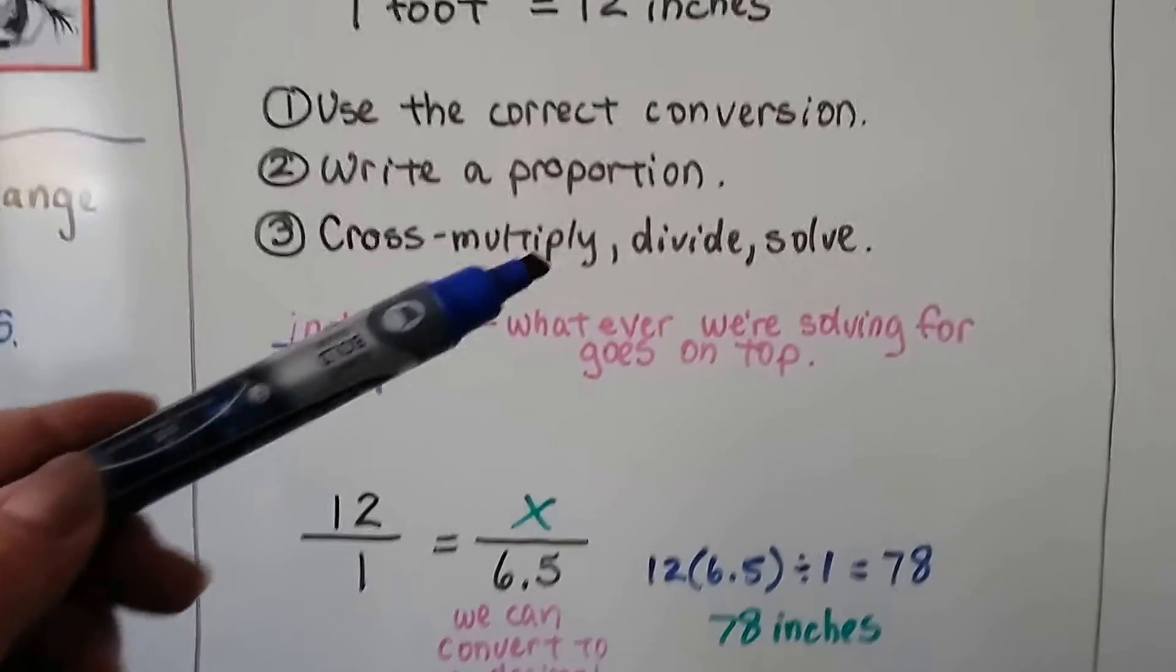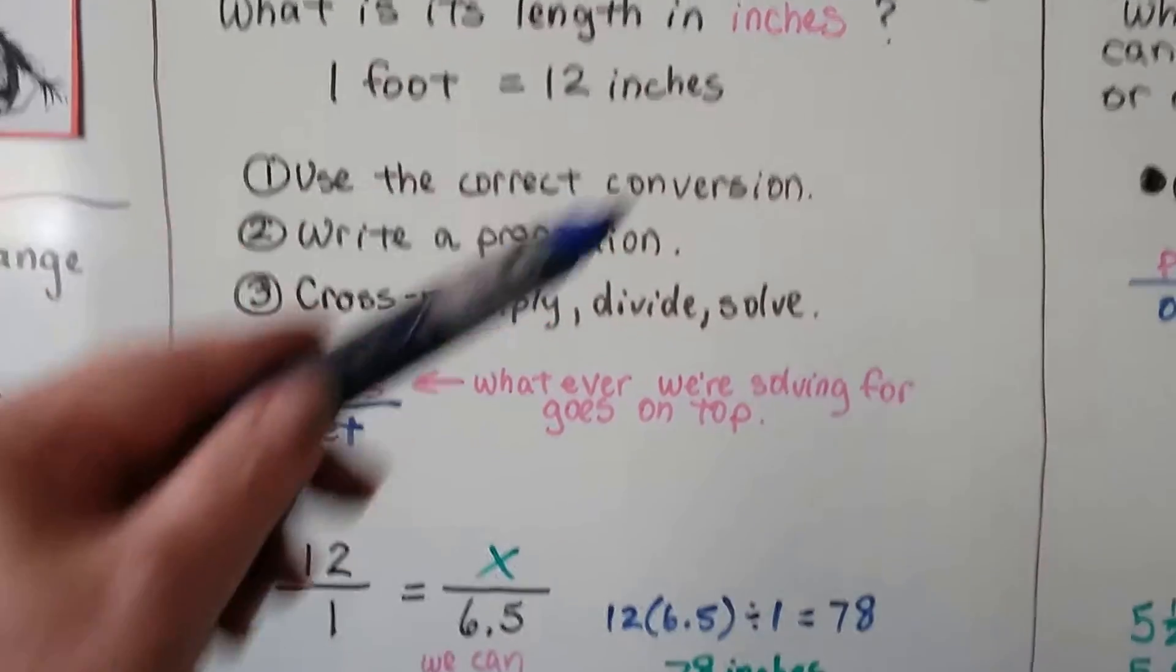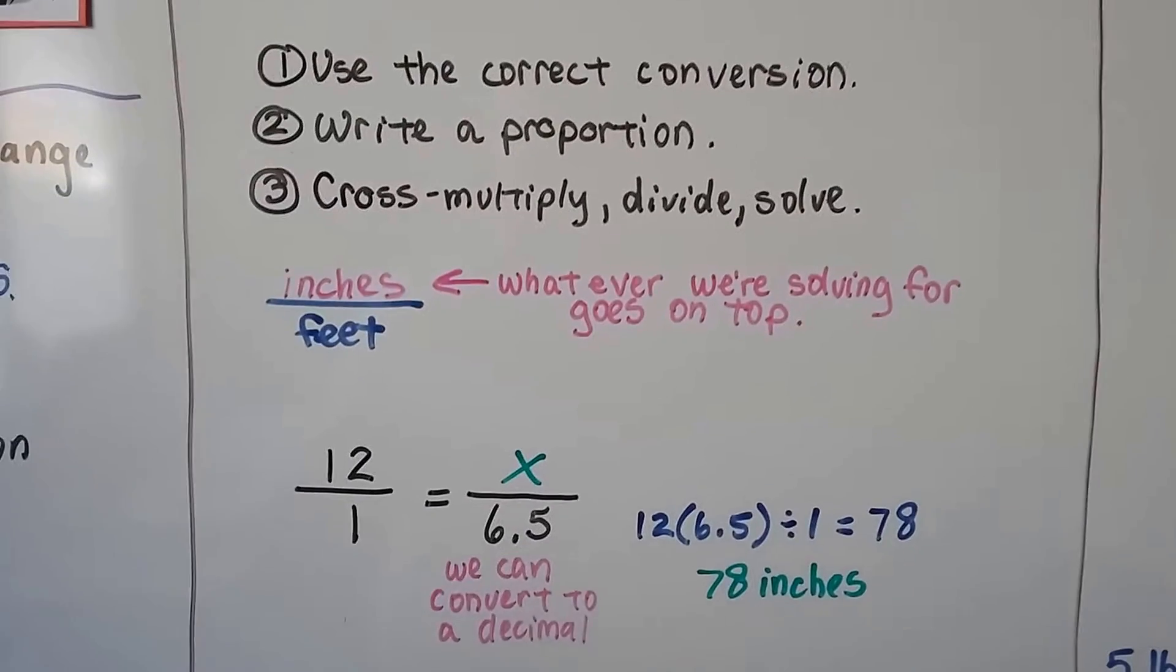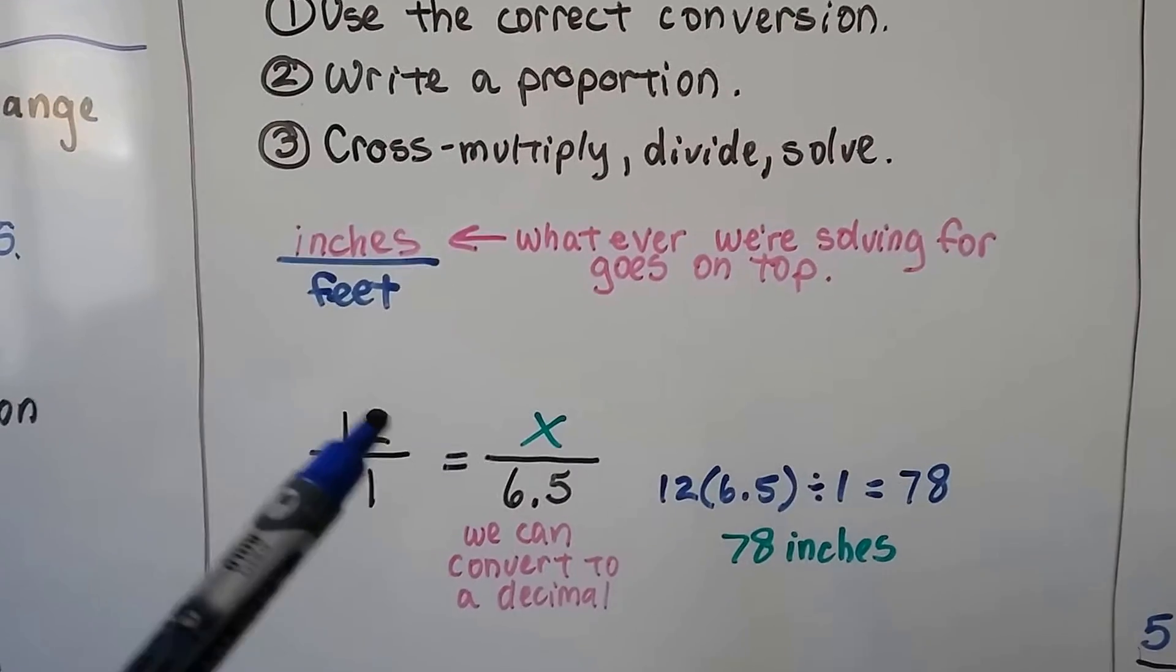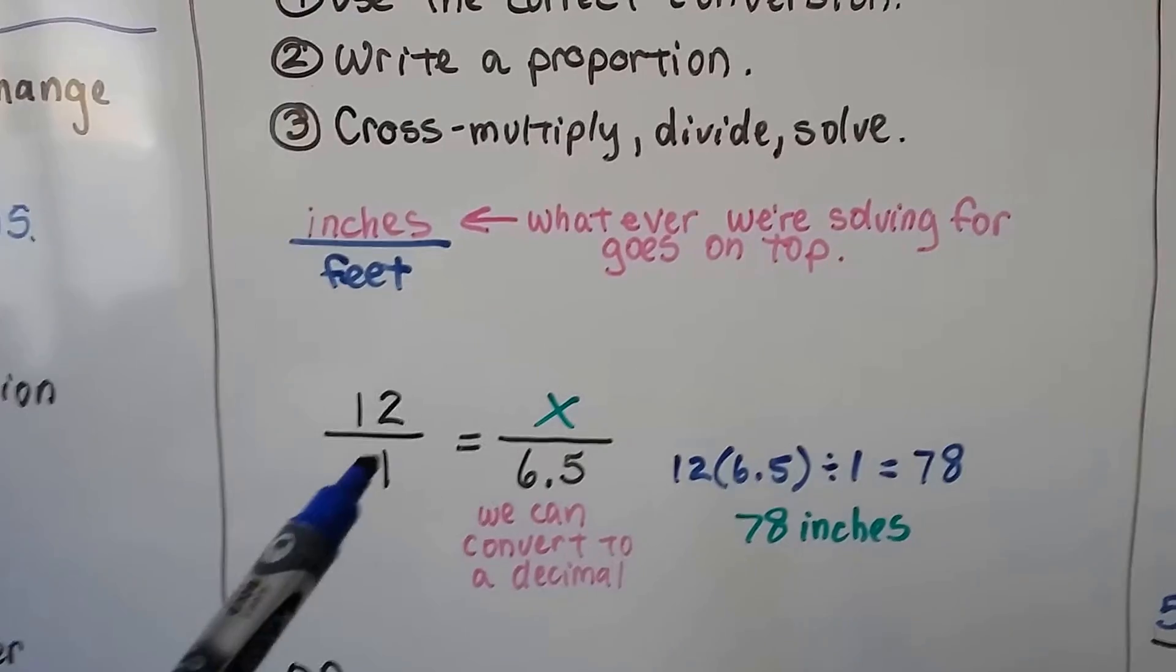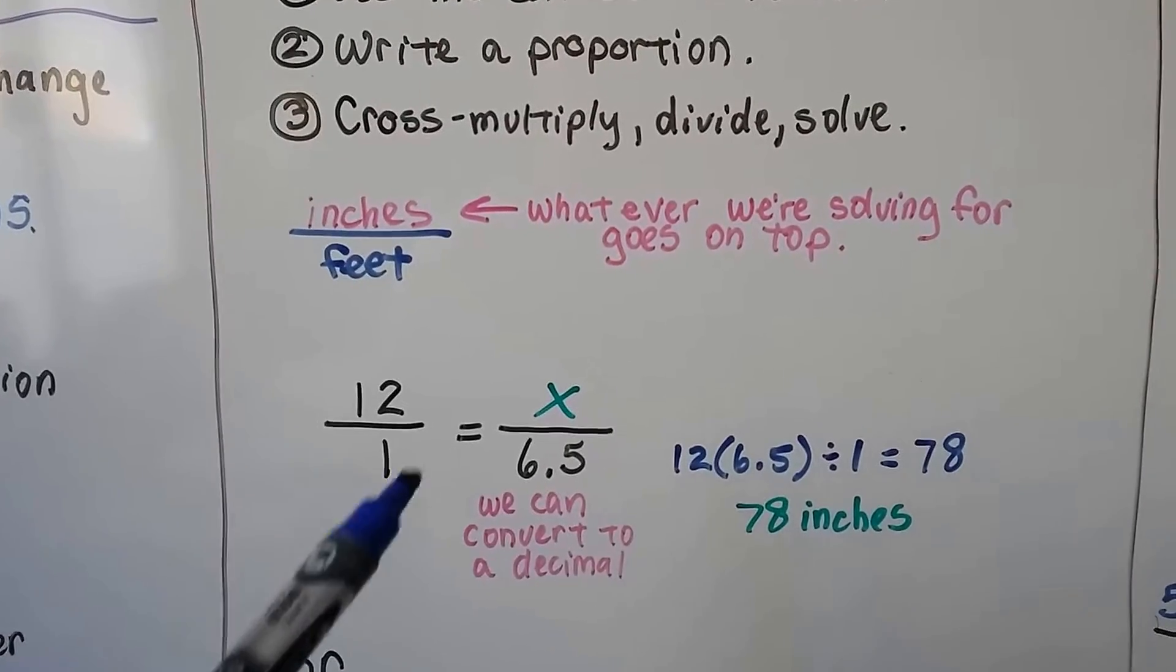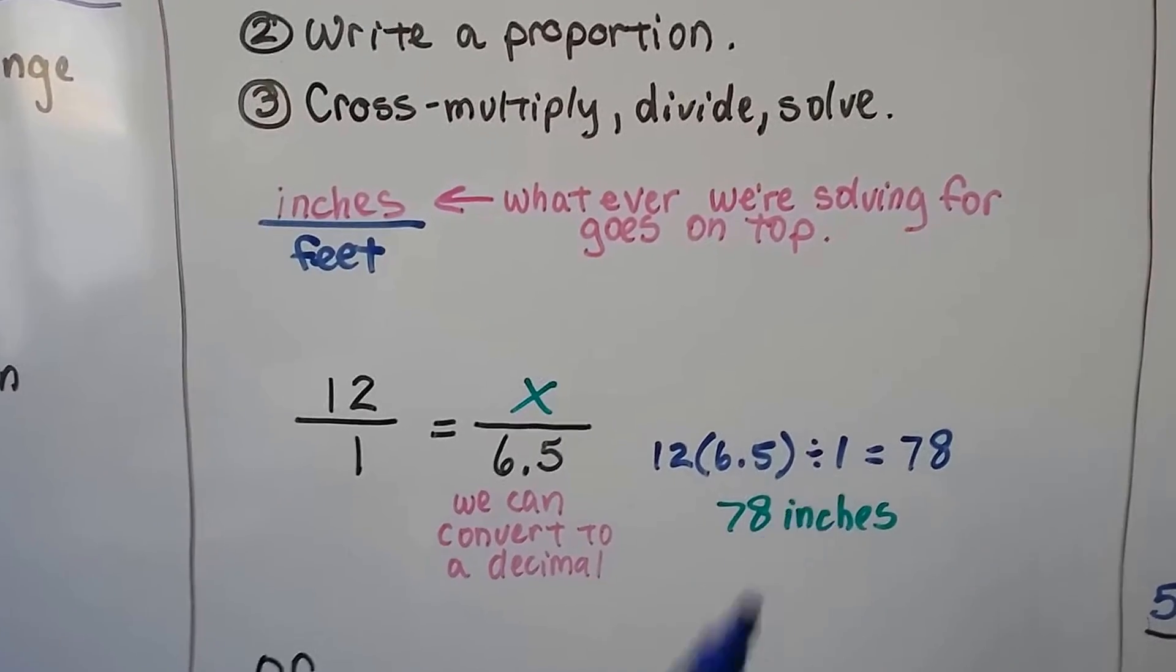We can convert this 6 1⁄2 to a decimal very quickly because it's an easy fraction. Then we can do 12 times 6.5. We divide it by the third number. Remember, that's how we do proportions. We get 78 inches.